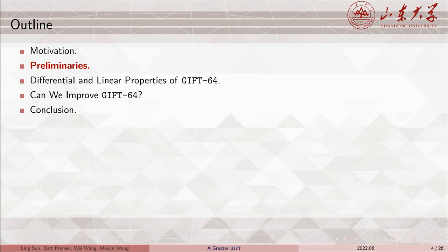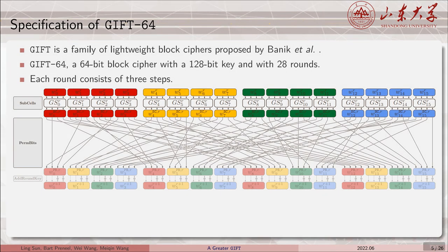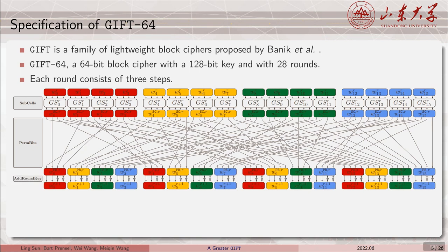Now we briefly review some preliminaries. GIFT is a family of lightweight block ciphers proposed by Beierle et al. We consider GIFT-64, which is a 64-bit block cipher with a 128-bit key and with 28 rounds. Each round consists of three steps. The sub-cell operation applies an invertible 4-bit S-box to every nibble of the cipher state. Then the perm-bit operation permutes the state in a bit-oriented manner. Following that, the add-round key operation adds the round key and the round constant.